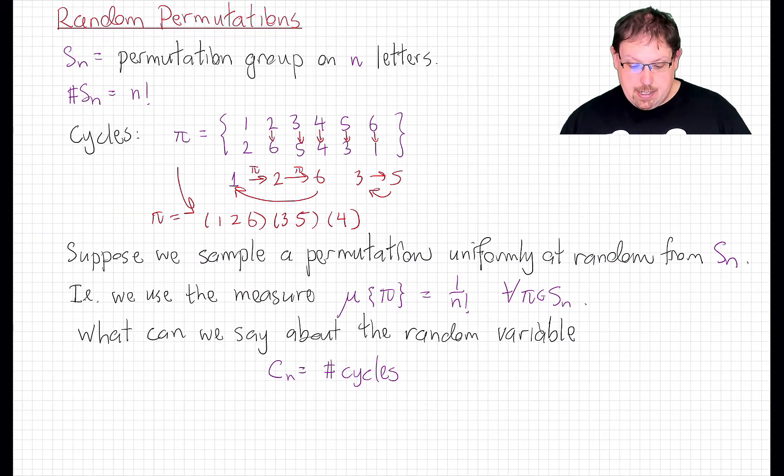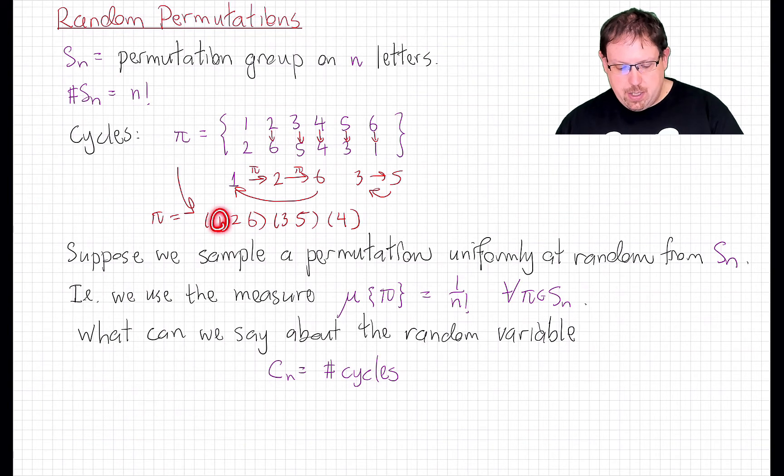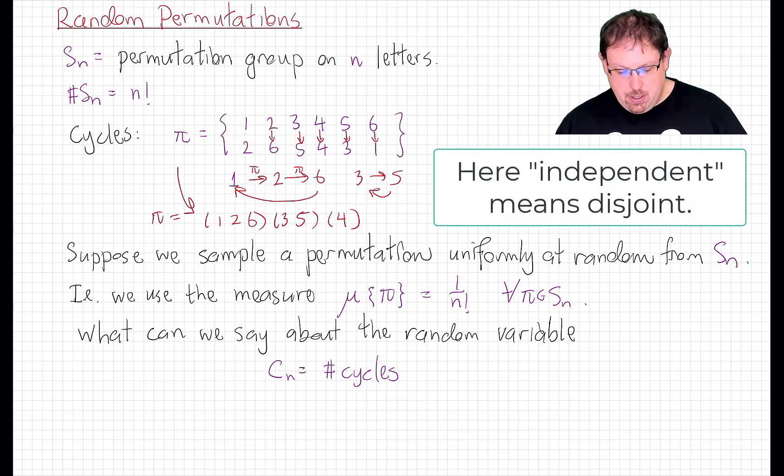This is the cycle decomposition of pi. We would write pi equals that. This tells us exactly how to recover pi. The cyclic order inside these doesn't matter. We could write it as 2, 6, 1 if we want, so we always write it canonically with the lowest number first. And since these cycles are independent from each other, it actually doesn't matter what order I write them. I'll still recover the same function in the end.